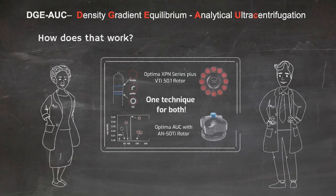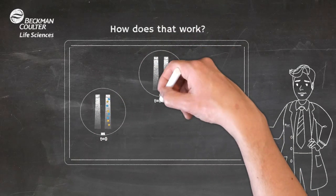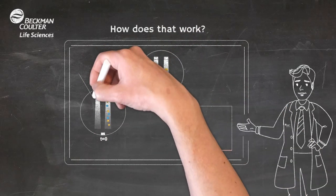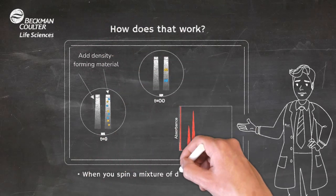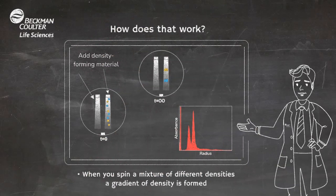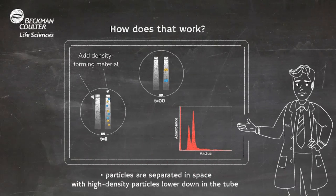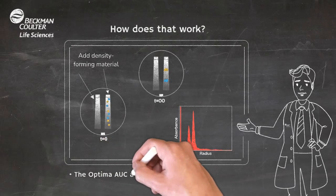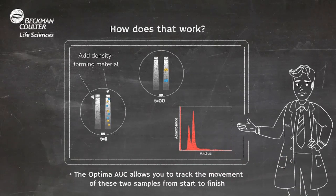How does that work? When you spin a mixture containing particles of different densities — such as empty and full capsids — in a solution containing a density gradient forming material like cesium chloride, a density gradient is formed. At the end of the experiment, the particles are separated in space, with the high density particles lower down in the tube than the low density particles. The Optima AUC allows you to track the movement of these two species from start to finish.